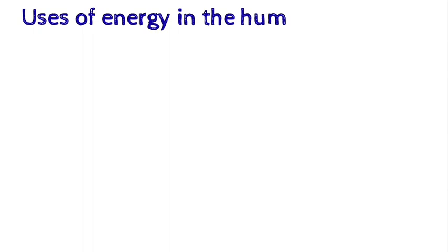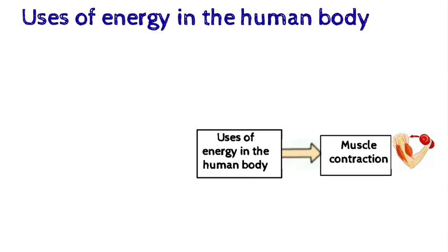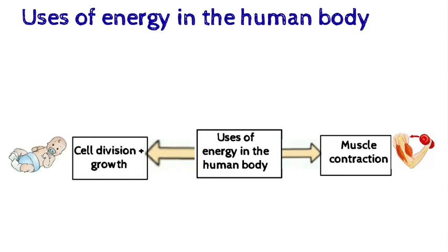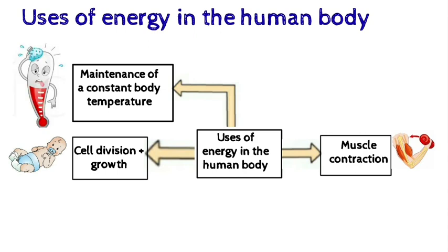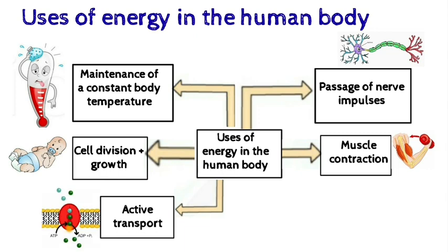Next, we look at the users of energy in the human body. The first is muscle contraction. The second is cell division and growth. The third is maintenance of constant body temperature. The fourth is passage of nerve impulses. The fifth is active transport, and the sixth is protein synthesis.